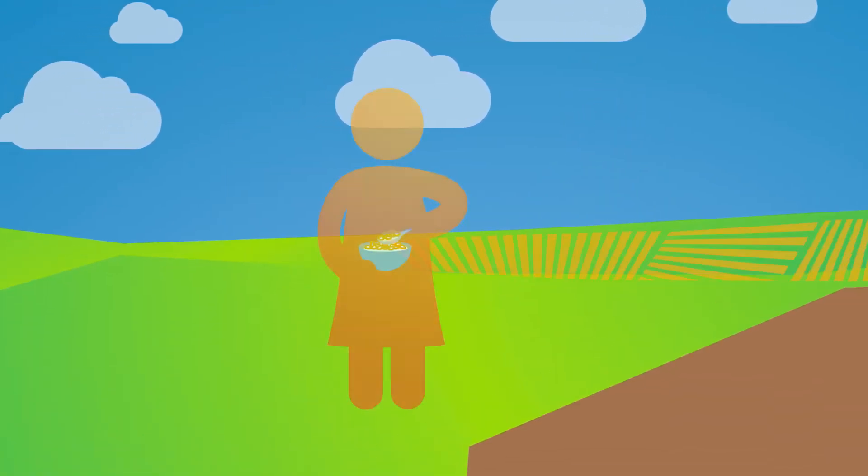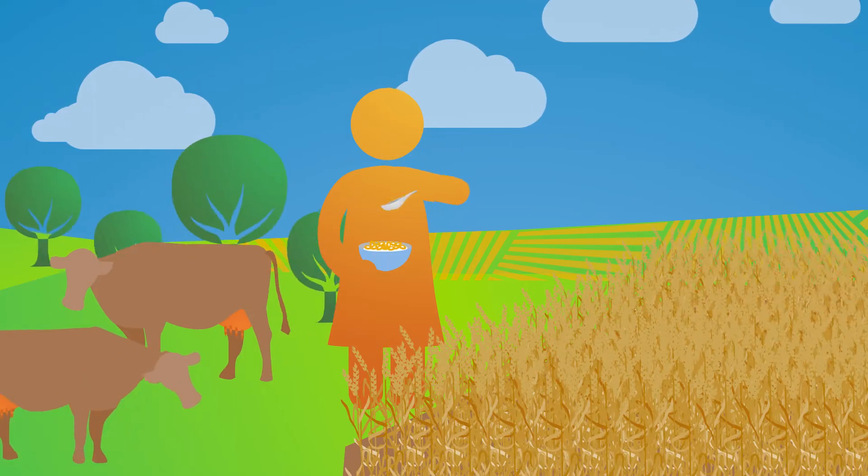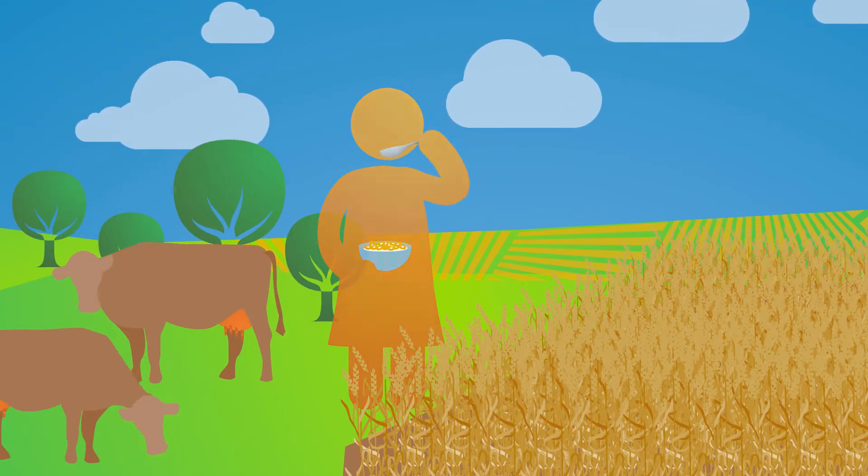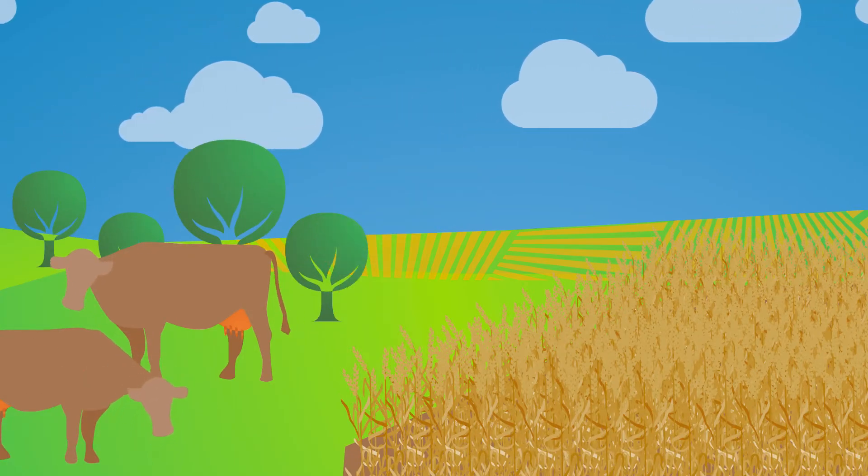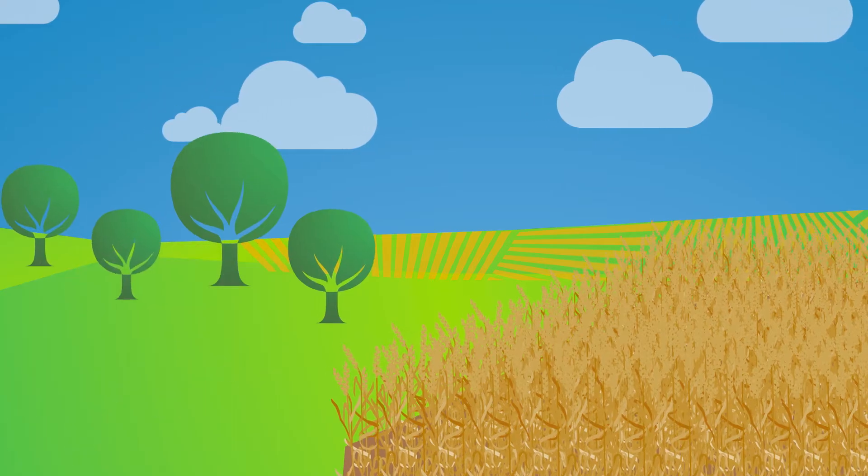We get our nutrients from plants and animals through the food we eat. Animals get their nutrients from the plants they eat, and plants take nutrients from the soil and elements from the air.